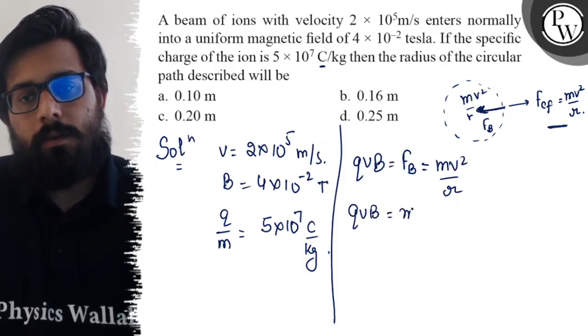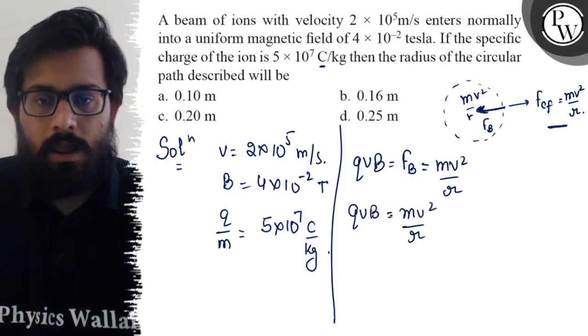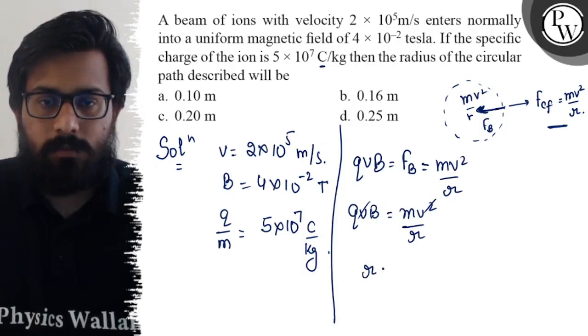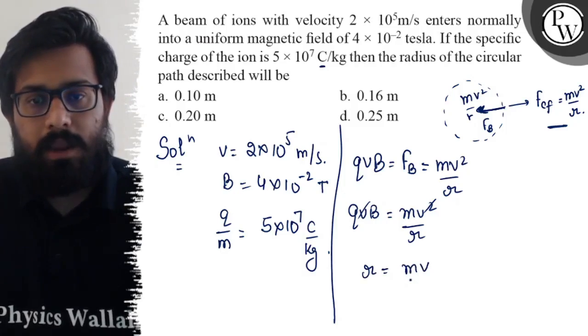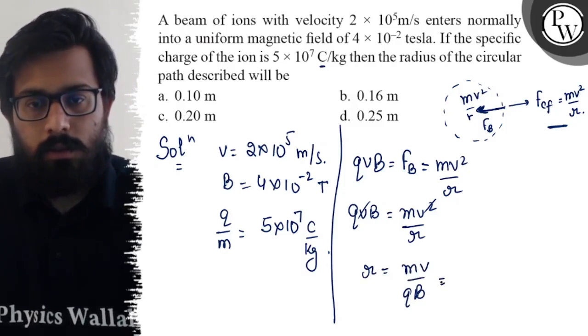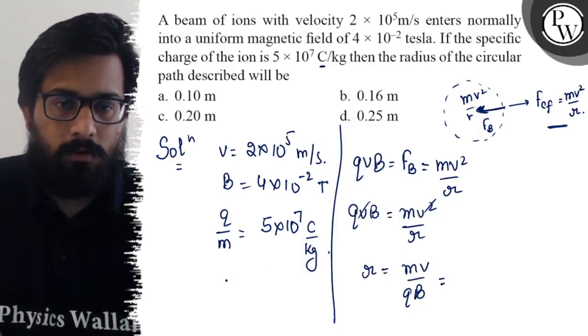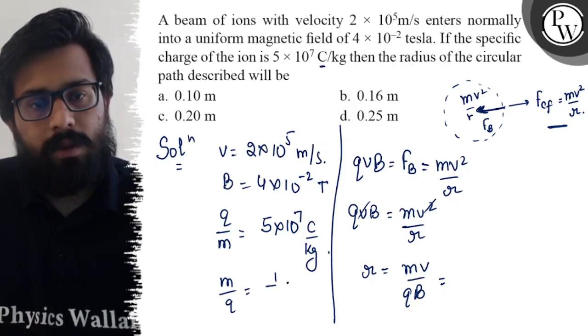Therefore, equating: qvB equals mv²/r. One v gets cancelled out. So from here the radius comes out to be mv by qB, or we can write this as m/q times v/B.